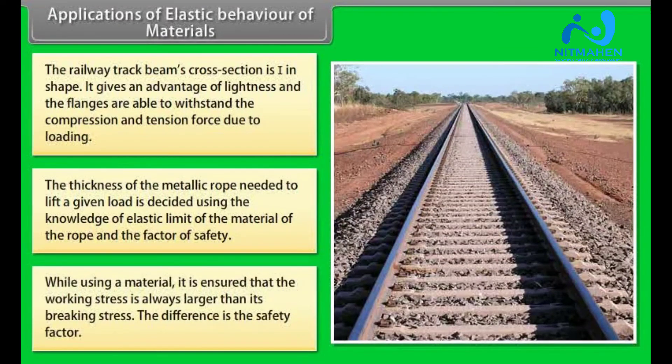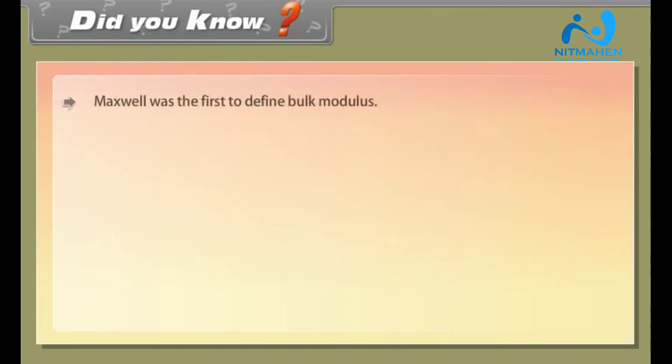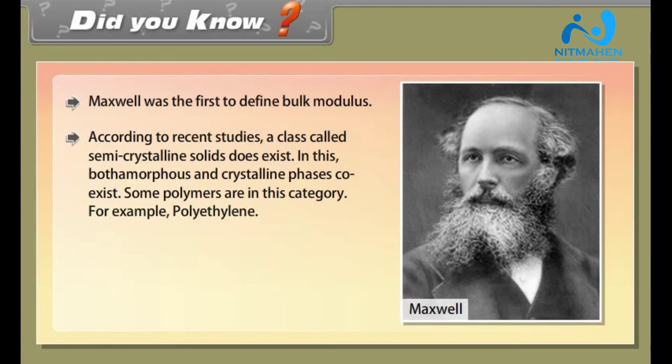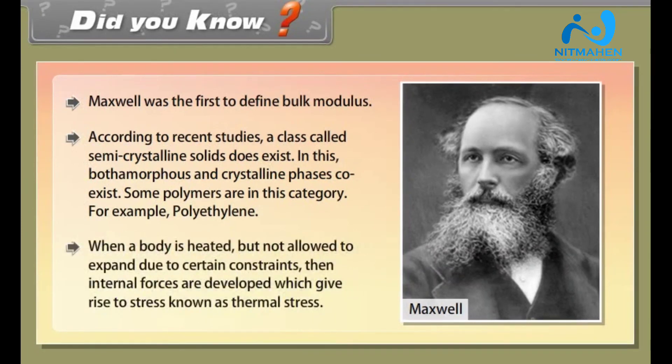The thickness of the metallic rope needed to lift a given load is decided using the knowledge of elastic limit of the material of the rope and the factor of safety. While using a material, it is ensured that the working stress is always larger than its breaking stress. The difference is the safety factor. Did you know? Maxwell was the first to define bulk modulus. According to recent studies, a class called semi-crystalline solid does exist in which both amorphous and crystalline phases coexist. Some polymers are in this category, for example polyethylene. When a body is heated but not allowed to expand due to certain constraints, then internal forces are developed which give rise to stress known as thermal stress.